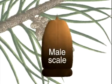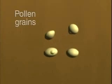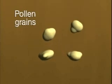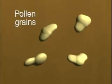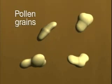Male cones produce microspores by meiosis. The microspores develop into pollen grains. Each winged pollen grain is a four-celled male gametophyte.